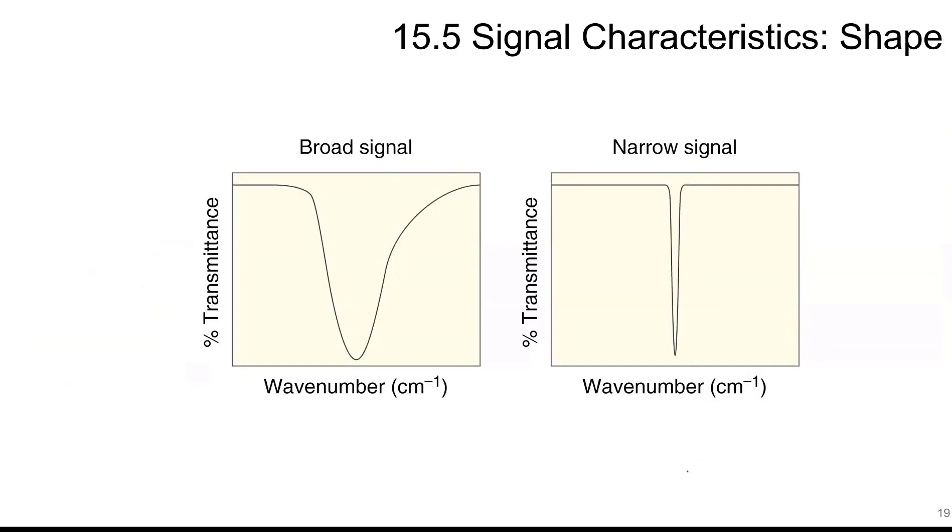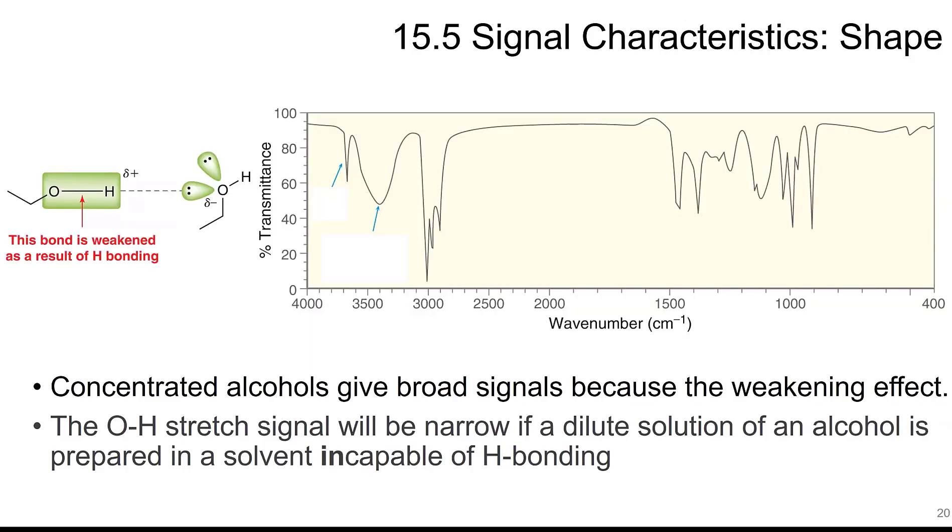We can also have different shapes for peaks. So we've seen the broad signal and also the narrow signal. The OH here can hydrogen bond to another OH, which is often why we get this broad peak. And this is a free OH. So if you have concentrated alcohols, this will give very broad signals because that's all it is, is alcohols very close to each other that can hydrogen bond to each other. So it broadens things out. But if you have an alcohol that is very dilute, it won't be able to find other alcohols of itself. So it won't hydrogen bond as much. And so you get a sharper peak.